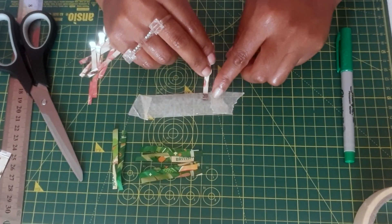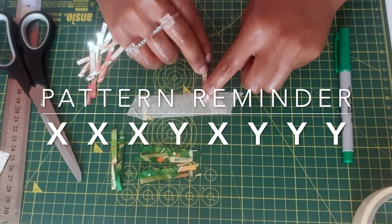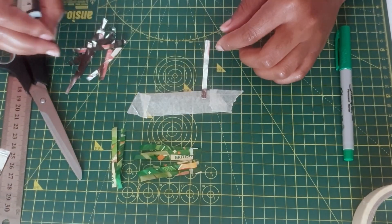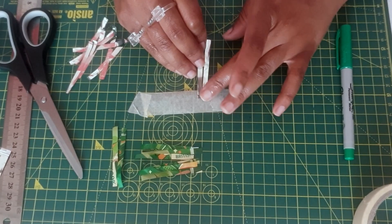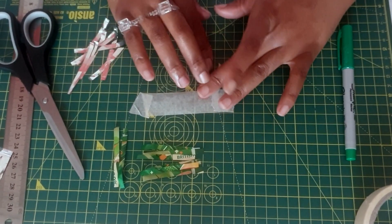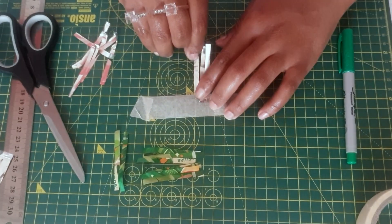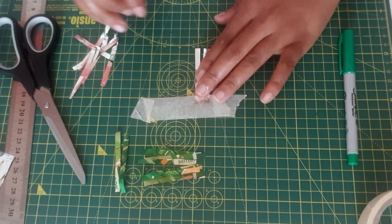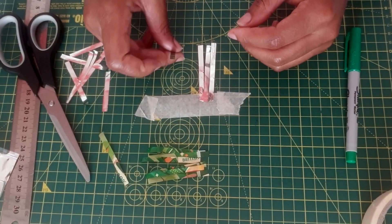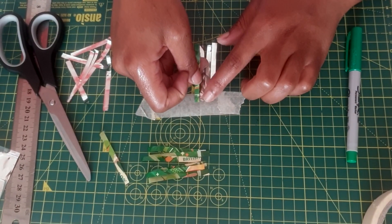Remember, we're starting out with x, x, x, y, x, y, y, y, which is silver, silver, silver, green, silver, green, green, green. So keep an eye out for that sequence as you watch me lay out my strips.